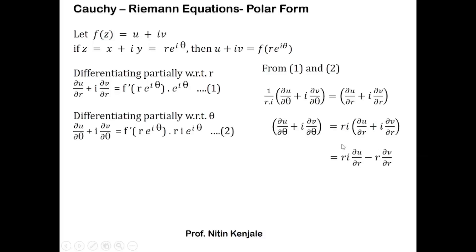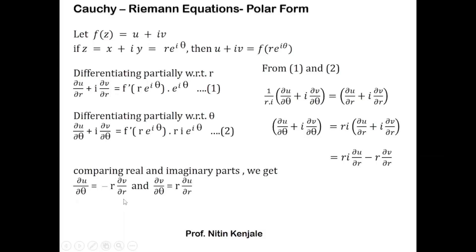Now we compare both sides for their real and imaginary parts. Comparing real parts: ∂u/∂θ = -r·∂v/∂r. Comparing imaginary parts: ∂v/∂θ = r·∂u/∂r. That is, u_θ = -r·v_r and u_r = (1/r)·v_θ. These equations are called the Cauchy-Riemann equations in polar form.